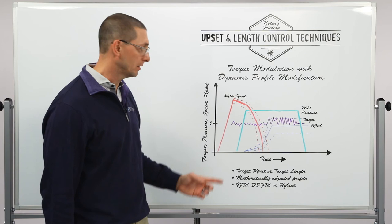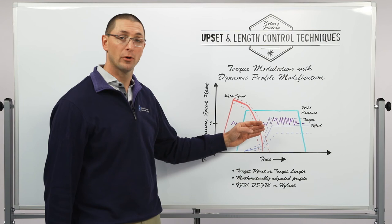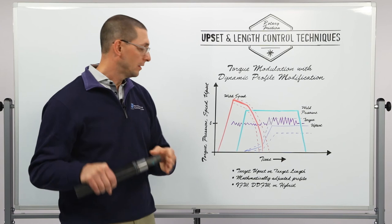So I make many adjustments over the course of time to a new mathematically adjusted profile so that I can take upset control and turn it into length control.